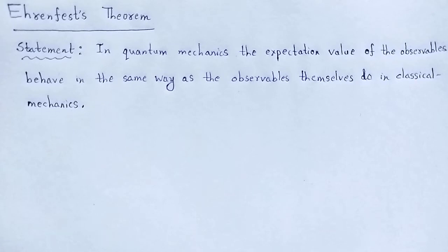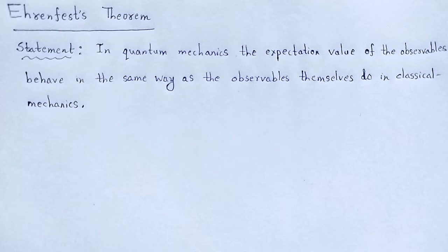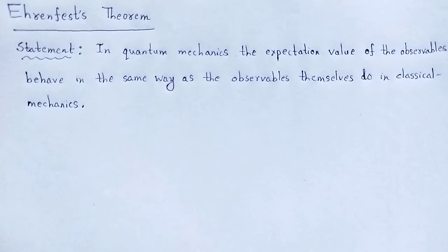In this video, we are going to discuss the Ehrenfest theorem and its proof by using the direct wave function method. There are two types of proof for Ehrenfest theorem: one is the direct wave function method and another one is Heisenberg's equation of motion. But here, we have to discuss the proof in terms of the direct wave function method. The proof based on Heisenberg's equations of motion will be studied later in upcoming classes. So, let us begin.